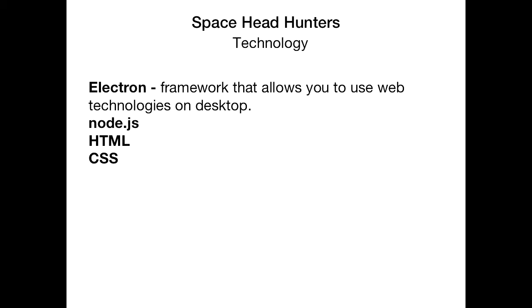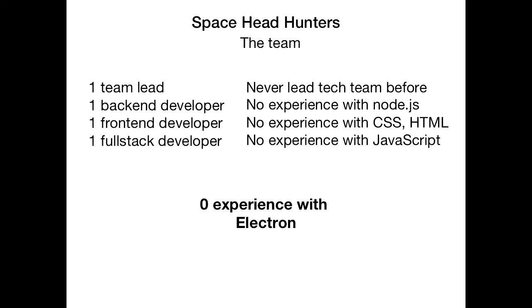So what technology did we use? We used Electron, Node.js, HTML, and CSS. Before I get into Electron, a side note on the experience. We were a team of four people. We had a tech lead, a team lead — me. I have some experience with project management but I never was a tech lead before. We had a backend developer with no experience with Node, a frontend developer with no experience with CSS and HTML, and a full stack developer that had never tried JavaScript before. So I think it looks like an amazing start for a project — if you've never tried, try it, you'll learn stuff.